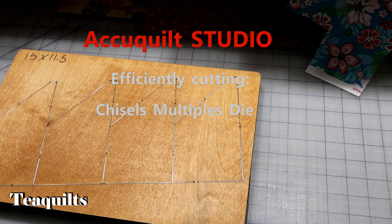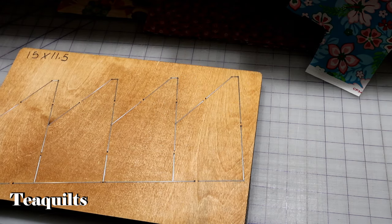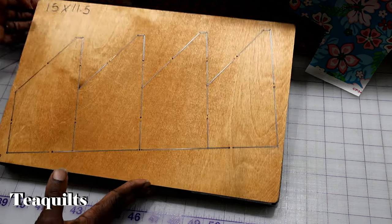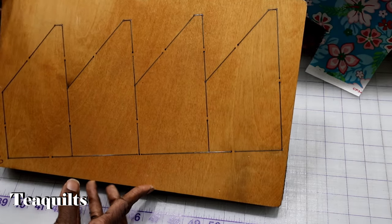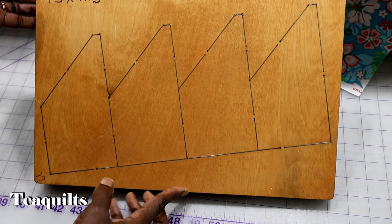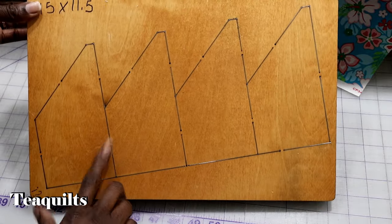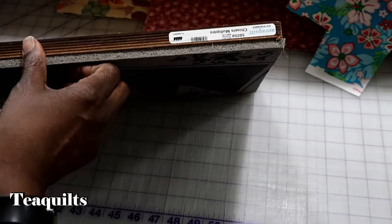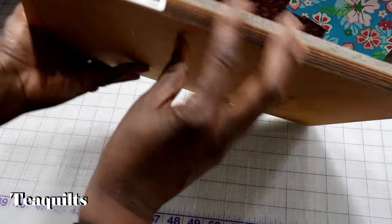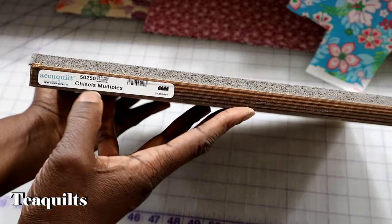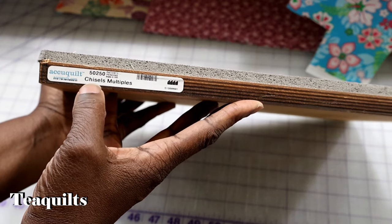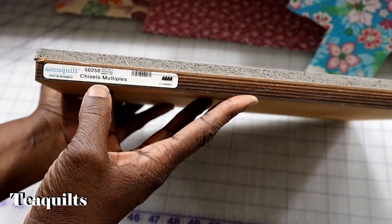I haven't seen anywhere that's showing you how to efficiently use this die, so I thought that I would show you what I do. I'm not saying that what I do is correct. I'm just trying to give you something on the internet for showing you how to cut this die. Again, this is for the AccuQuilt Studio system and right here it says the die number is 50250, and it's chisels multiples.